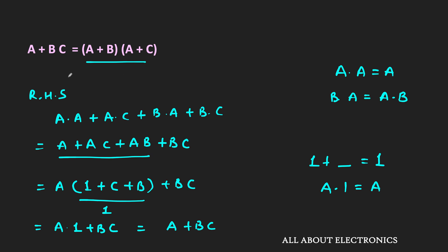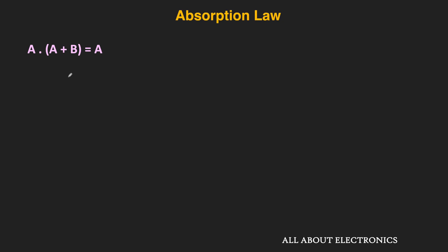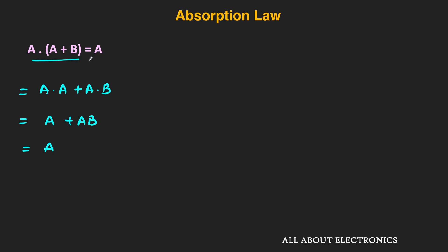Using the same distributive laws, we can prove that a·(a + b) = a. To prove this, take the left-hand side: a gets ANDed with each term inside the bracket, giving a·a + a·b. Since a·a = a, this becomes a + ab. And we have just seen that a + ab = a. Therefore the AND operation of a with (a + b) equals a.